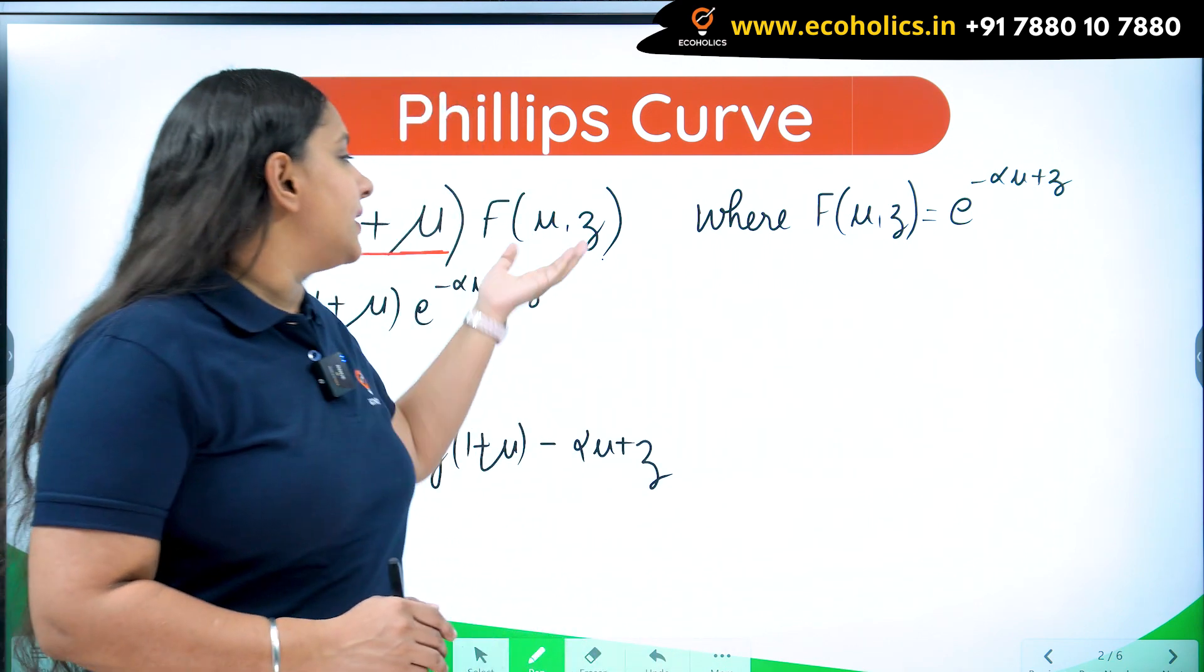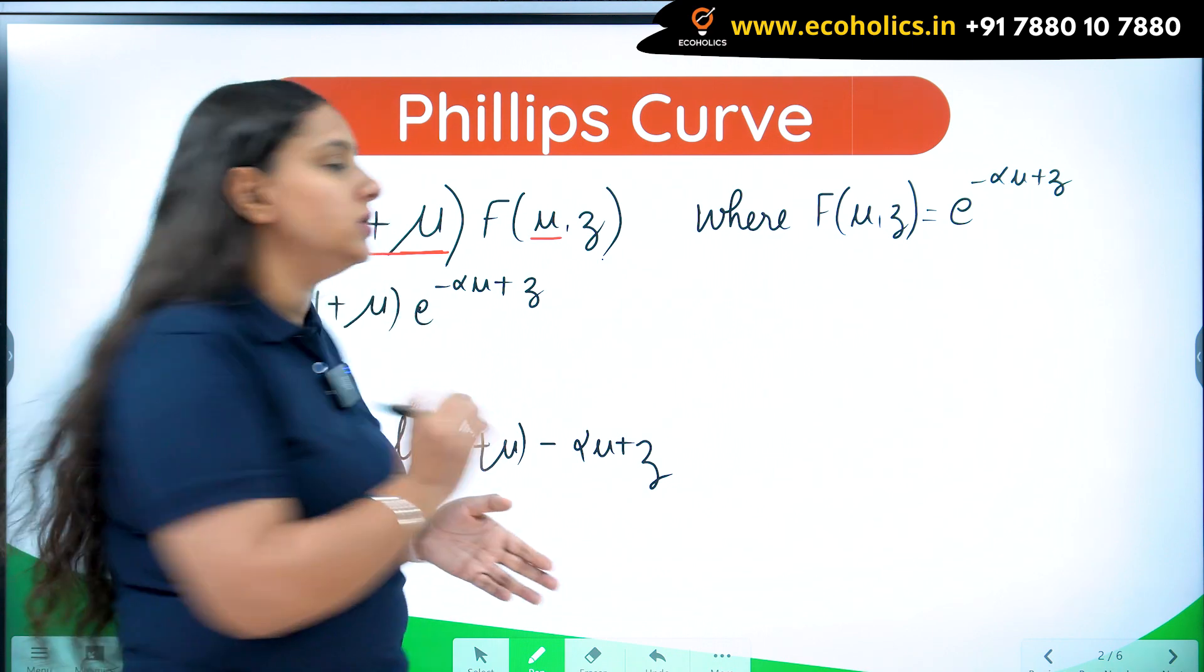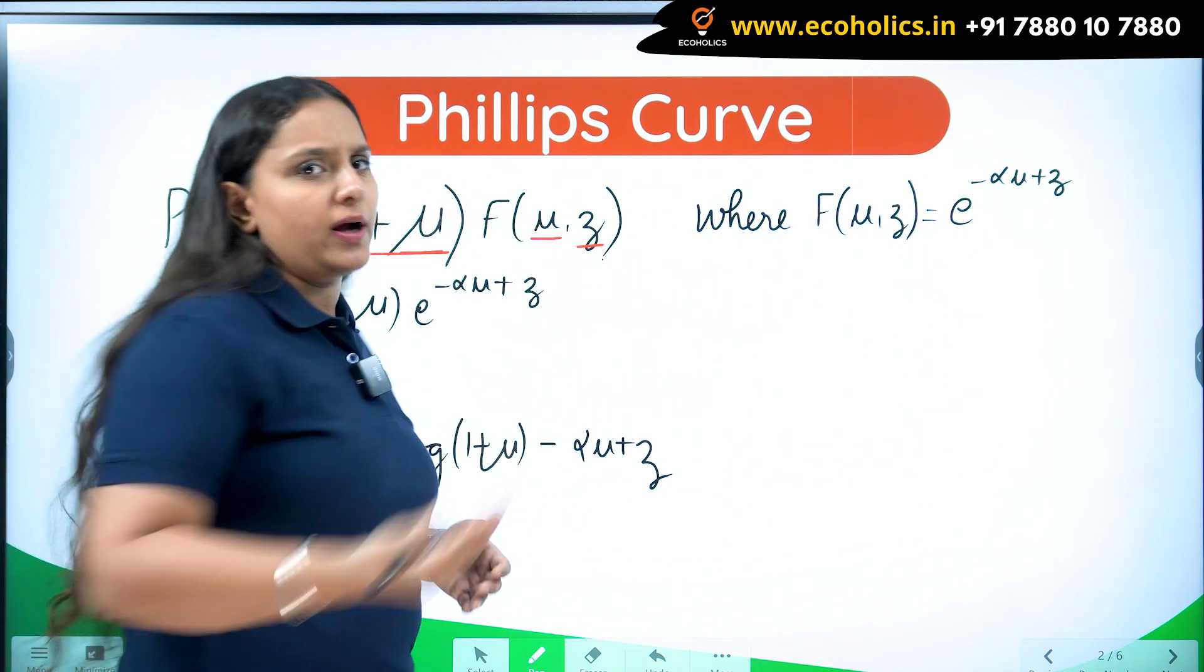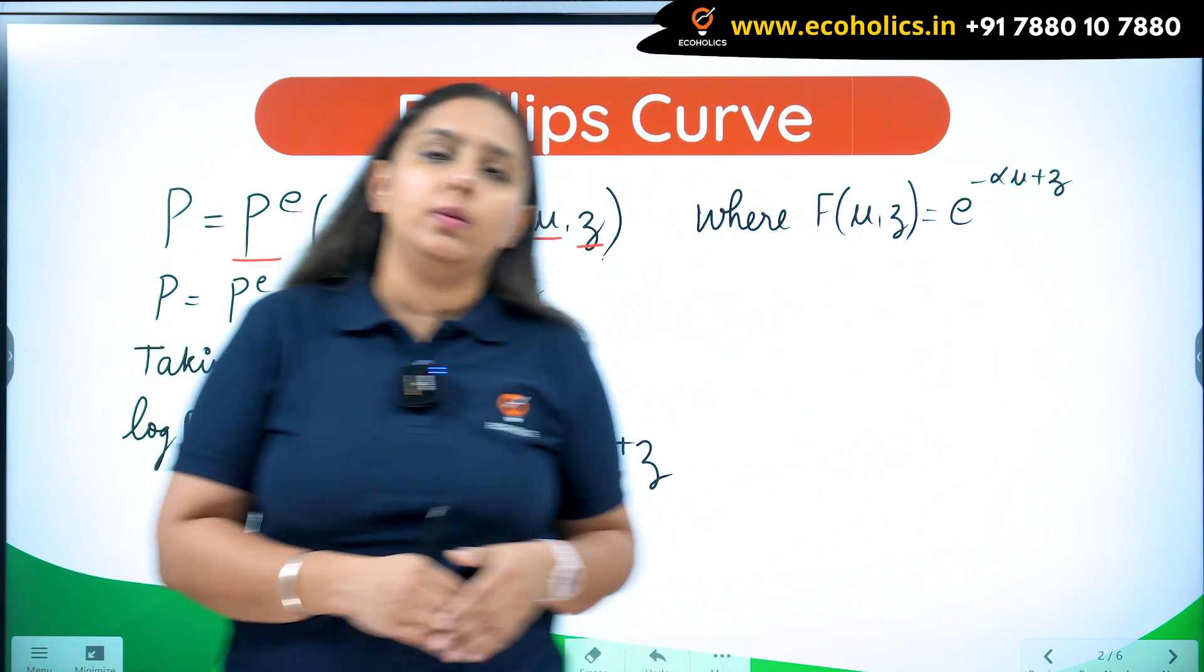This function F(U,Z) represents other factors affecting price setting in the economy. U represents unemployment because we have to deal with unemployment and inflation. Z represents other factors, for example unemployment benefits.